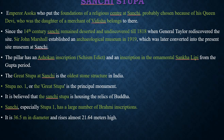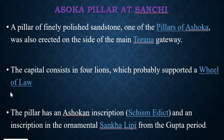Between the pillars and architraves, on the east and north, superbly carved elephants are made. In the west gate there are dwarfs, and in the south Torana there are lions. In the east Torana there are beautifully made Yakshi figures holding a mango tree. Sanchi also has a pillar of finely polished sandstone — one of Ashoka's pillars erected beside the main Torana gate. The capital consists of four lions which probably supported a wheel of law, and the pillar bears an Ashokan inscription.